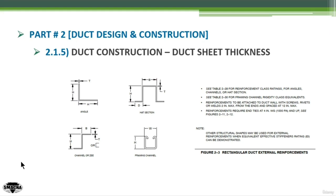Let's talk about the reinforcement physical shape or structural shape. You have four approved shapes as per SMACNA. The first shape is an L-shaped angle, the second shape is a hat section or inverted U section, the third shape is a framing channel or slotted channel, and the fourth shape is a Z-shaped channel.